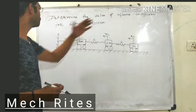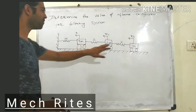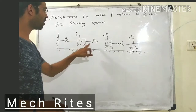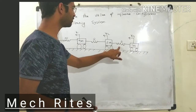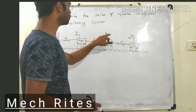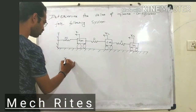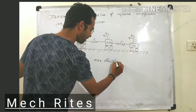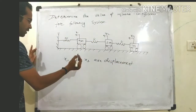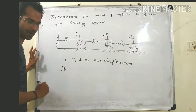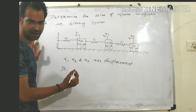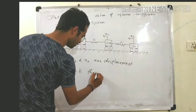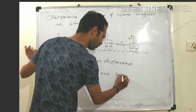We have the question: determining the value of influence coefficient for the following system. I have selected one system where basically the masses are 4M, 2M, and M, and these masses are connected with springs — one spring of 3K between the wall and 4M, another spring K connecting 4M and 2M, and spring K connecting 2M and M. The masses have displacement values x1, x2, and x3. The 3K, K, and K are the spring coefficients or stiffnesses.